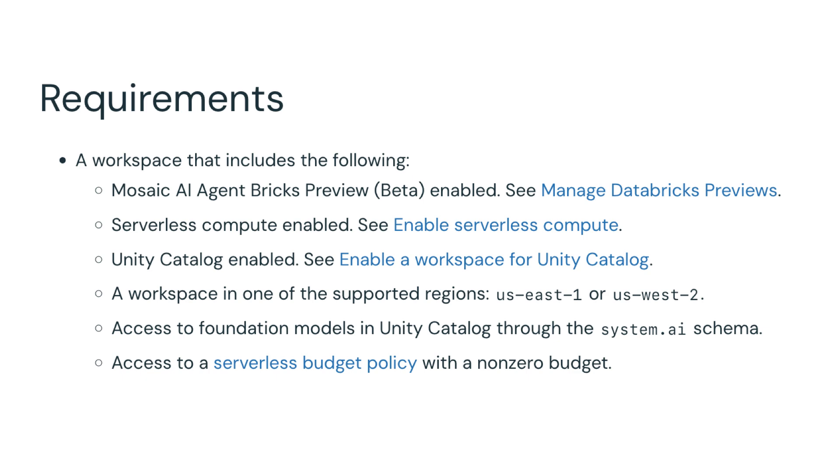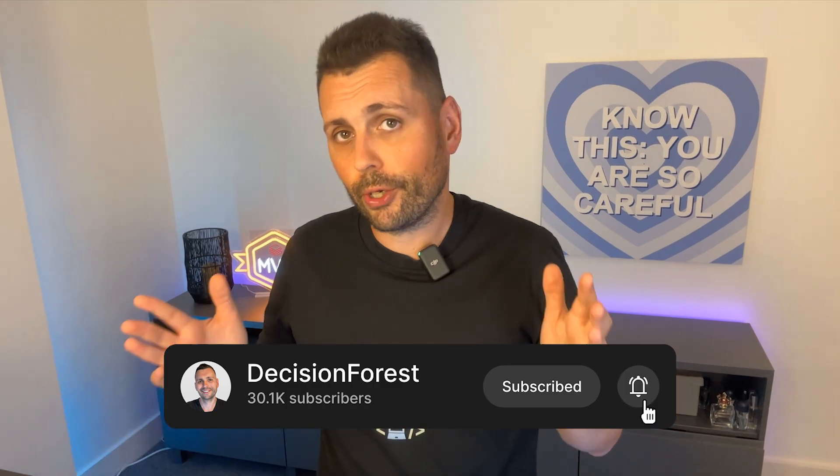You also need a serverless budget policy with a non-zero budget, because these agents don't run for free. We're going to see how much they cost in a bit, so if your environment isn't already set up with serverless, Unity Catalog, and Mosaic AI, this isn't really a two-click demo. There's still a little bit of platform work that needs to be done first, but if you're an admin, it won't take you two months to get these approvals. I understand if you're working for a big organization and you don't have access — it really sucks, but at least this video can help you so you're not going to feel like you're missing out.